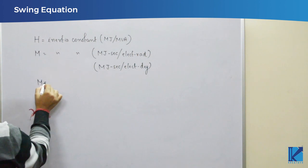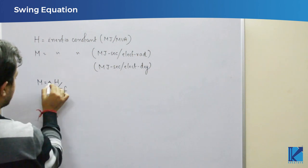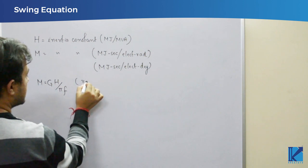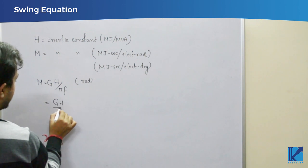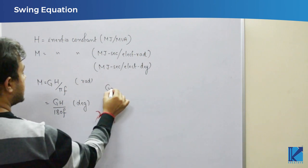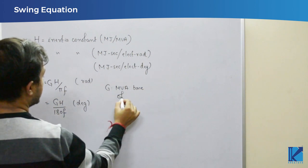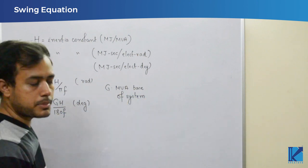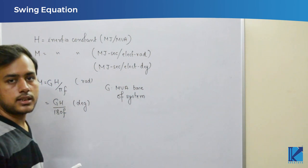Now, this M is basically equal to GH upon pi f for radians. If you want this first unit, it can also be written as GH by 180 f for degree. What is this G? G is the MVA base of the system. Because we know in any system, we select two base values. One is the voltage base, other is the power base. So this is the MVA base of your system. That is the relation between the inertia constants.